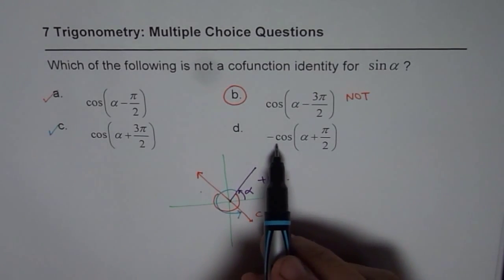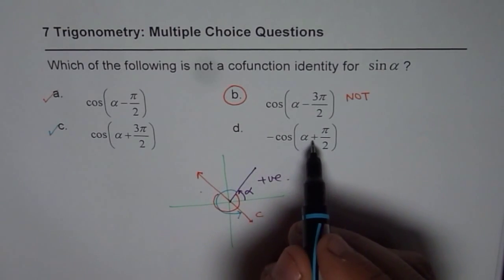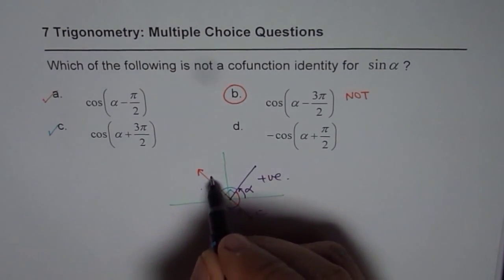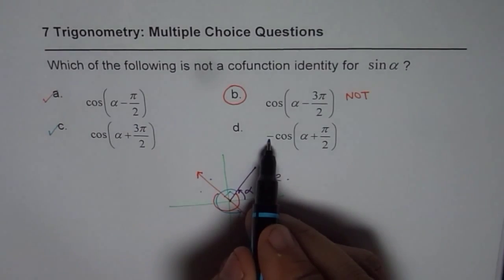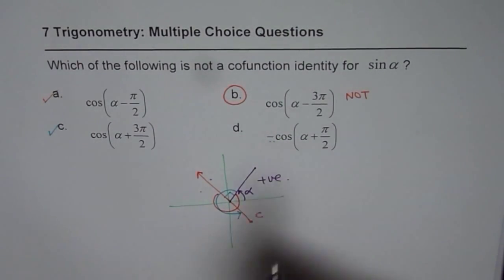The next one here is -cos(α + π/2). Now, when I say α + π/2, then we are in this quadrant. Since we have taken minus, that is correct. So, this is indeed sine of alpha.